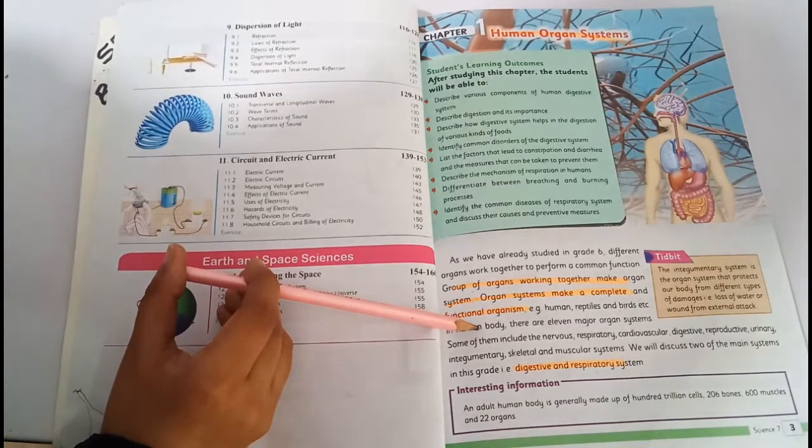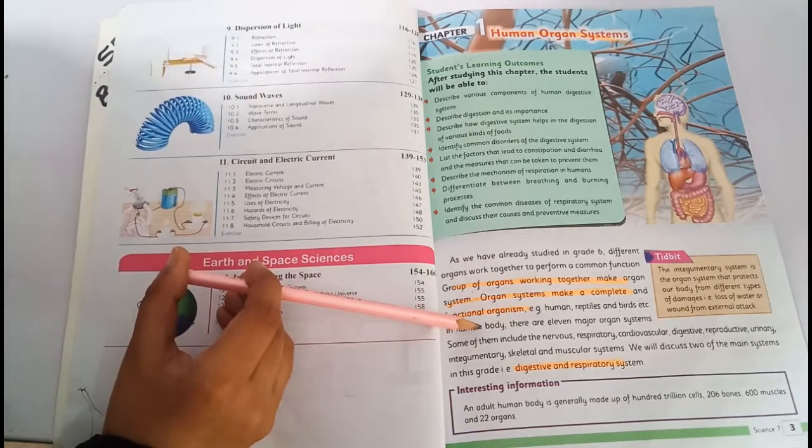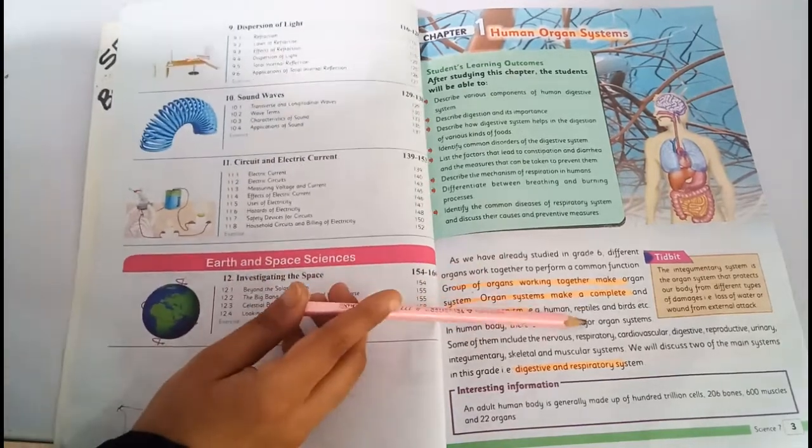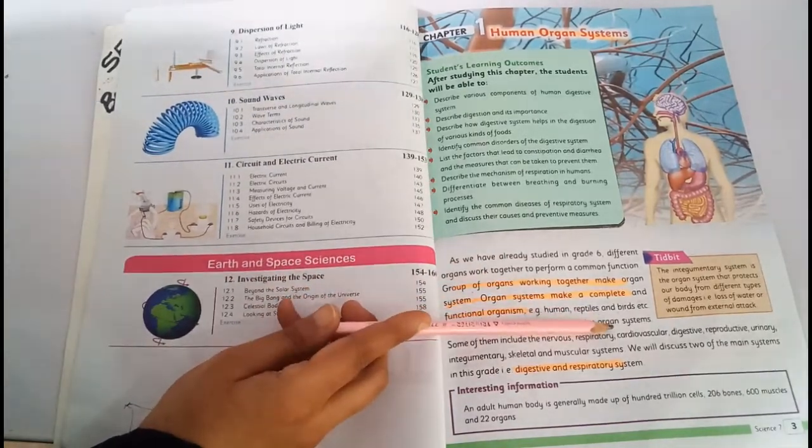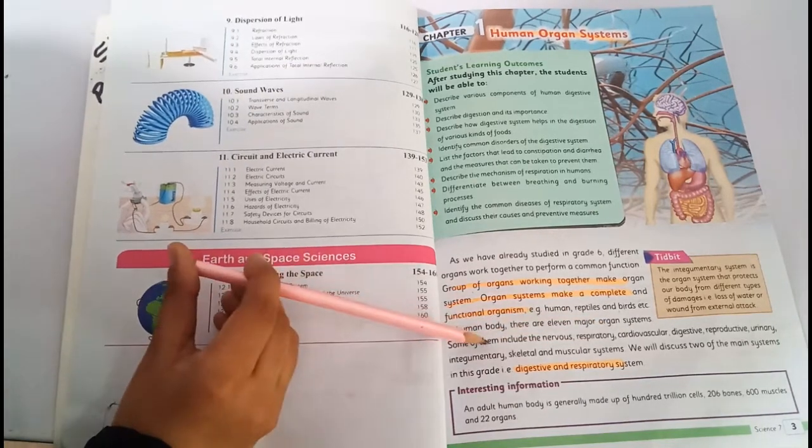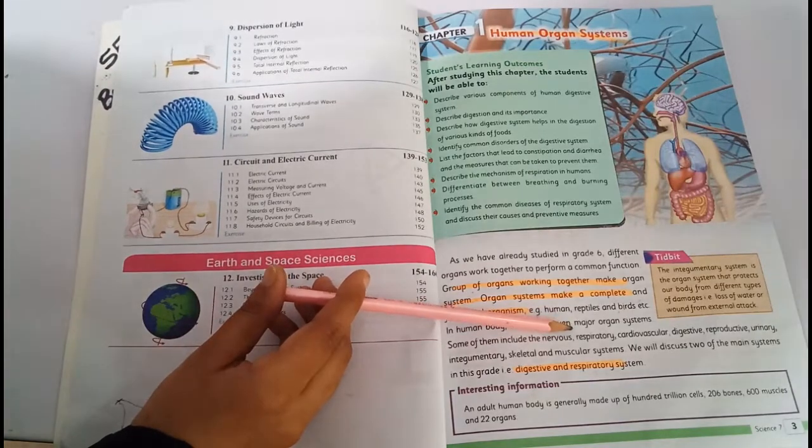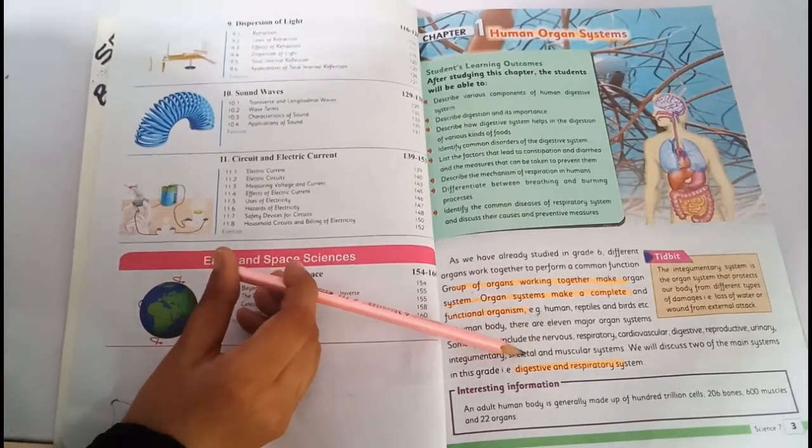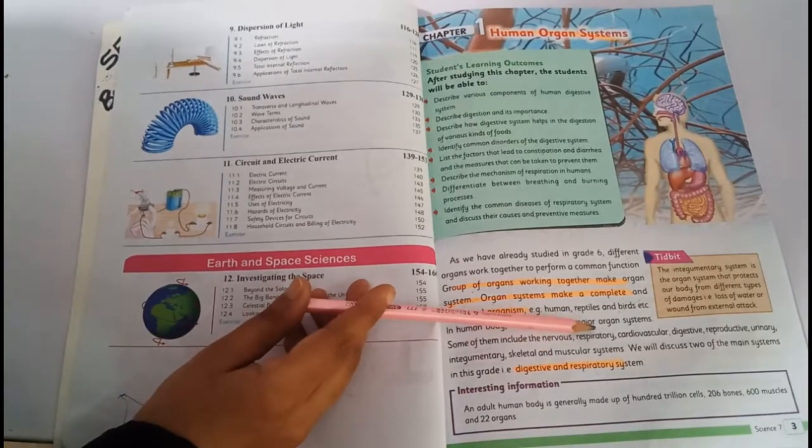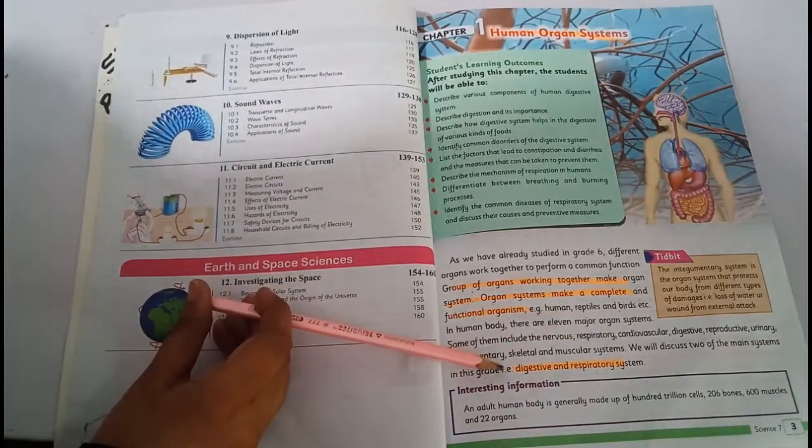The human body has about 11 major systems: nervous system, respiratory system, cardiovascular system, reproductive system, urinary system, integumentary, skeletal and muscular system. But here we will discuss just two systems: digestive and respiratory system. Our first topic is digestive system.